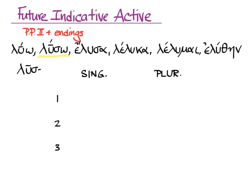Now we need the endings and a chart to put them in — singular and plural, first, second, and third person. Here are the endings: o, ace, a, omen, eta, usi or usin with that nu movable.